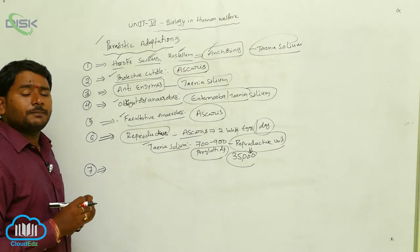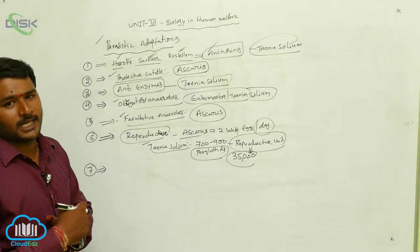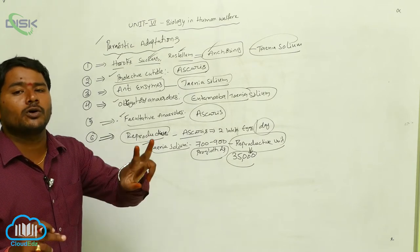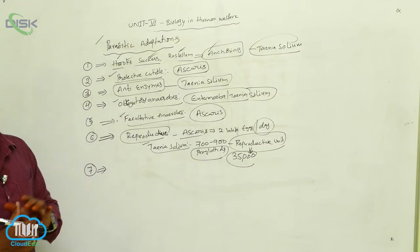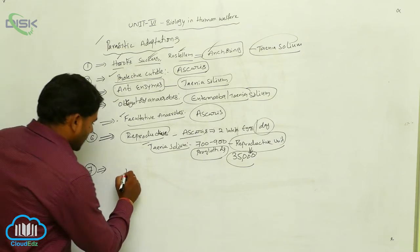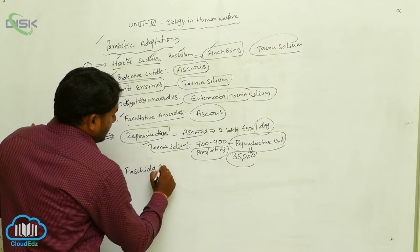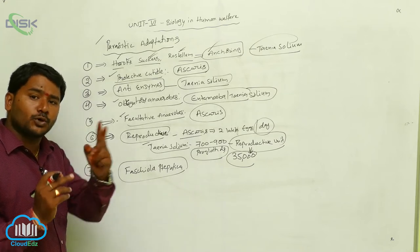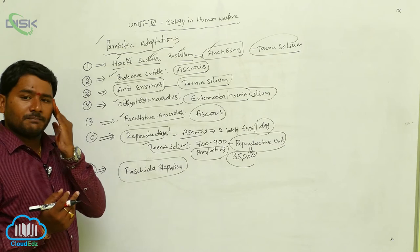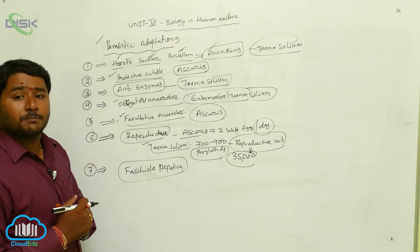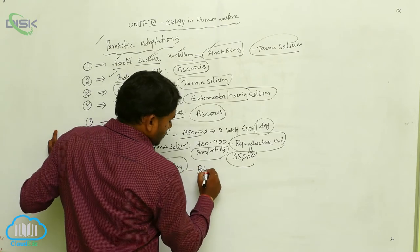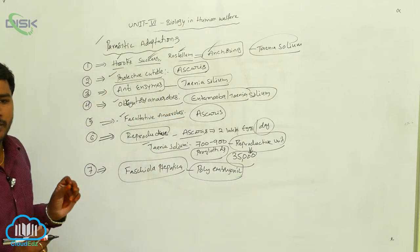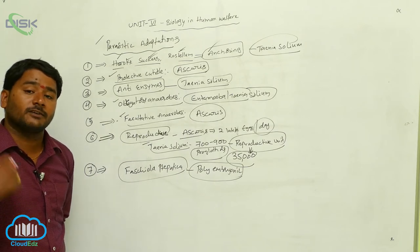Some parasites have complex life cycles that enhance their ability to reach two hosts and improve their population. For example, Fasciola hepatica goes through two hosts — snail and sheep. It also exhibits polyembryonic conditions, where one zygote develops into a number of embryos, which then develop into parasites.